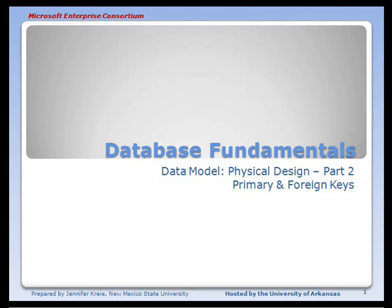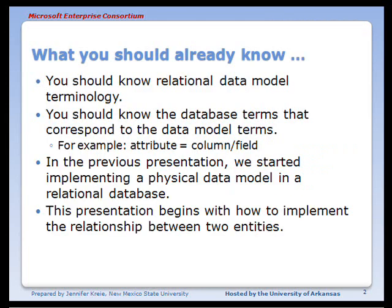In this presentation, we'll look at primary and foreign keys. We'll see how they are used to implement a relationship — the line we see between two entities in a data model. What you should already know before viewing this presentation is the data modeling terminology and the database terms that correspond to data model terms. In the immediately previous presentation, we started implementing a physical data model into a relational database, where we saw that an entity becomes a table. Now we're going to build the relationship.